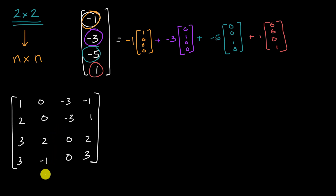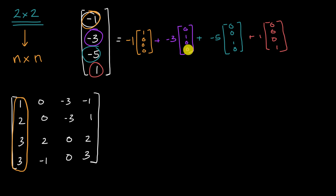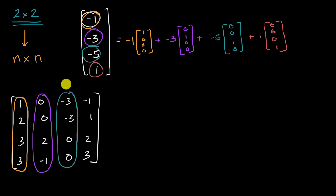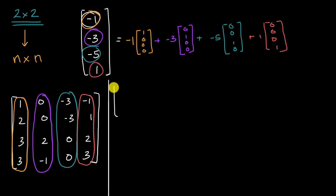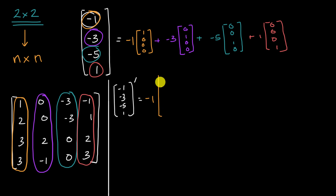It's completely analogous to what we did in the two-by-two world, in two-dimensional space. Instead of the (1,0,0,0) unit vector, we're now going to use the first column of the matrix. Instead of the (0,1,0,0) unit vector, we're now going to use the second column. Instead of the (0,0,1,0) unit vector, we're now going to use the third column. And instead of the (0,0,0,1) unit vector, we're now going to use the fourth column. The mapping of our original vector (-1, -3, -5, 1) is going to be computed by substituting those columns.